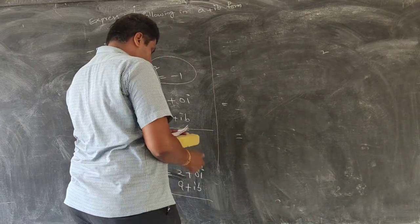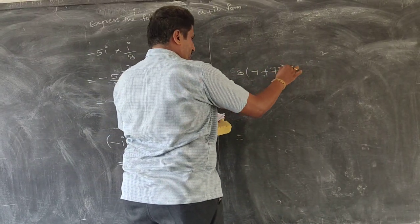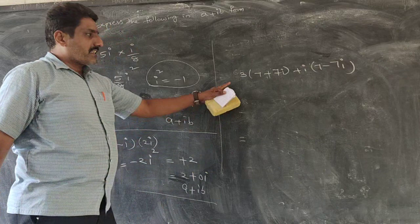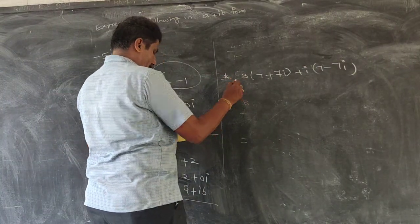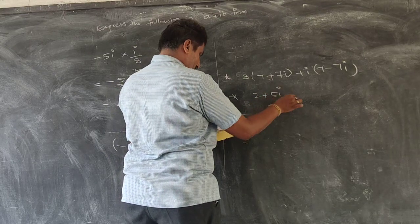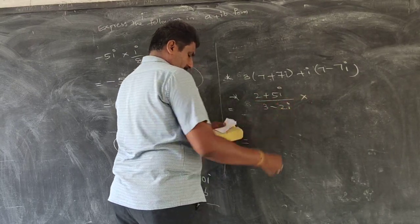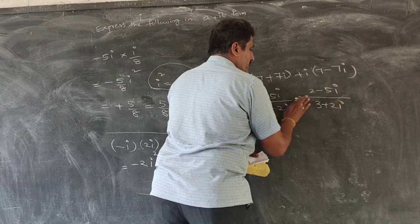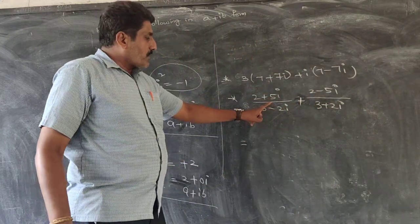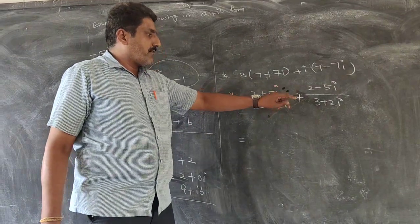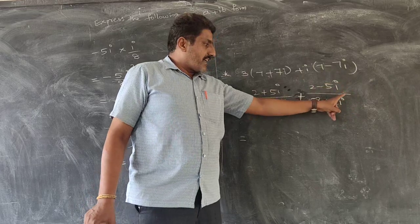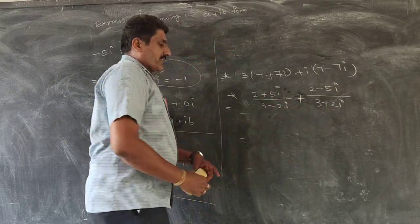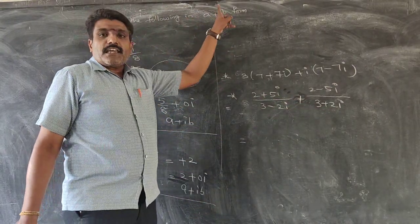This is for your assignment. The first problem is 3 into (7 plus 7i) plus i into (7 minus 7i). If you multiply, you will get the answer in the form of A plus iB. Another question: (2 plus 5i) over (3 minus 2i) plus (2 minus 5i) over (3 plus 2i). First you have to divide and multiply with the conjugate to get A plus iB form, then add them, or simply take LCM to get the direct standard form of A plus iB.